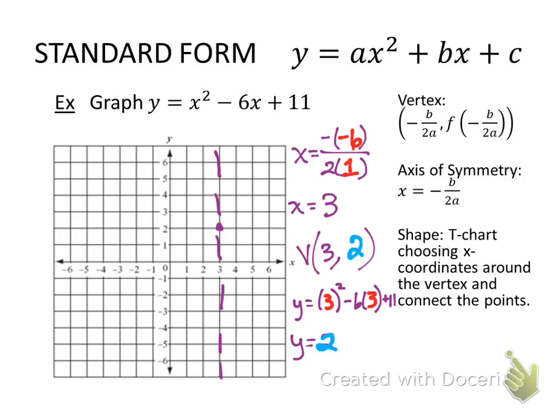Shape is determined by choosing x-coordinates around the vertex and connect the points. So what we do, we set up a t-chart. We're going to choose x-coordinates around the vertex's x-coordinate, but we make sure that they're on the same side of the axis of symmetry. So let's choose. So when we plug in 4, we get an output of 3. I'm going to put 3 in red because we had to get that value after substituting 4 into the equation. So when we plug in 5, the output became 6, and we're going to graph it. Graph each one of those.